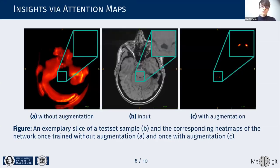We used the heatmaps to investigate why this is the case. The version trained without augmentation didn't even focus on the structure we were interested in — on the left, other parts of the brain were highlighted that may correlate with the LC's position. On the right, the network trained with augmentation actually learned to focus precisely on the small locus ceruleus.